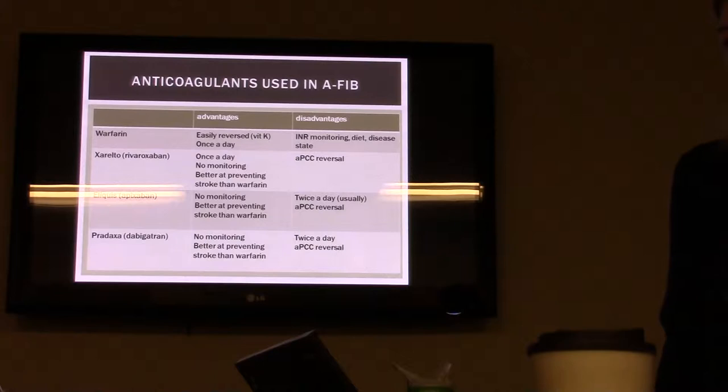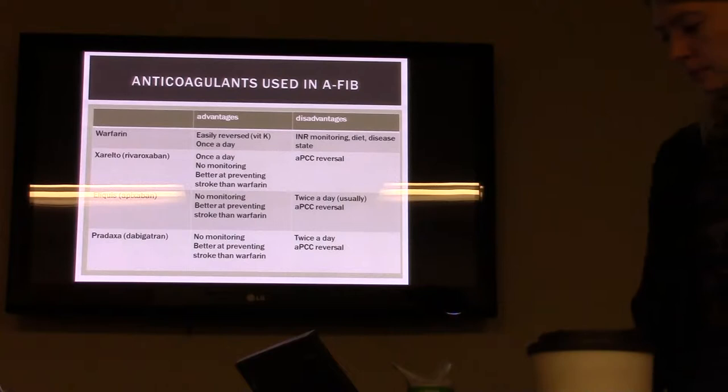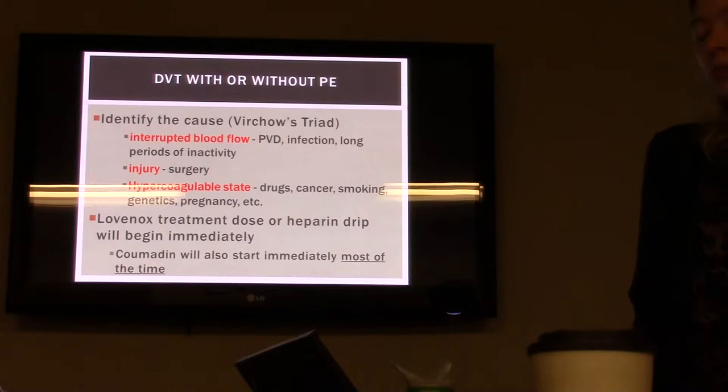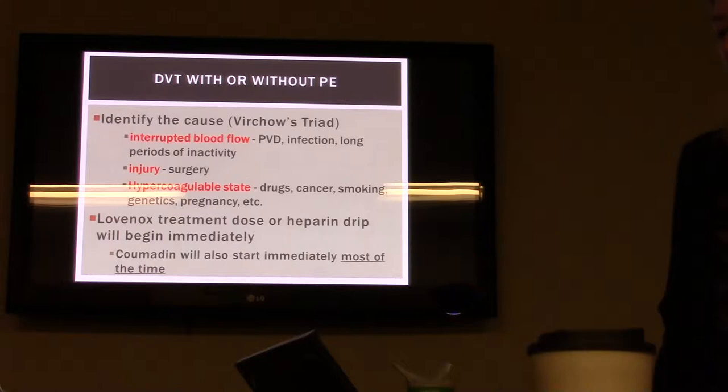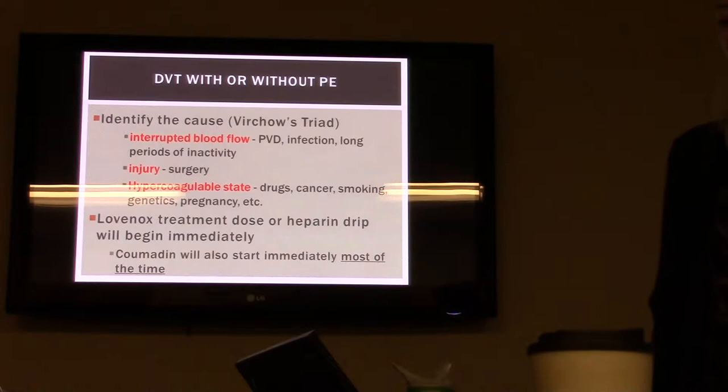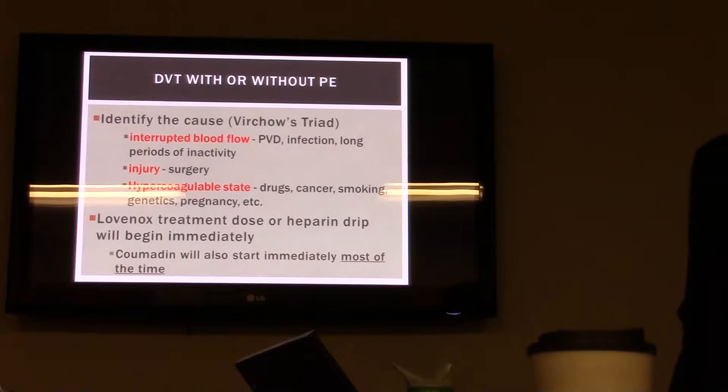The advantages of the newer oral agents — Xarelto, Eliquis, and Pradaxa — are mainly that you don't need constant monitoring. When you have somebody with a DVT, either with or without PE, you want to try to identify the cause, which is part of Virchow's triad. You look for interrupted blood flow — causes could be PVD, vascular disease, infection, long periods of inactivity, surgery as an injury, or a hypercoagulable state from genetics, pregnancy, drugs, cancer, or smoking.